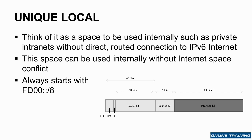So 64-bits reserved for the interface ID enables a number of different mappings to be used in that interface ID. For example, because it's 64-bits, I could base the interface ID off of the MAC address. Remember, the MAC address is 48-bits, so you could actually map the entire MAC address, which you know is globally unique — that's set by the hardware manufacturer. I could map that as part of the interface ID.